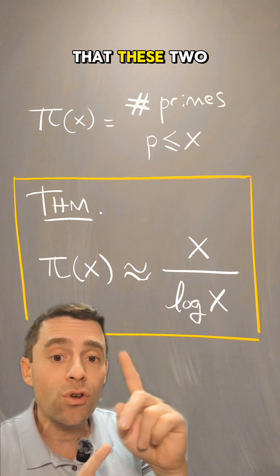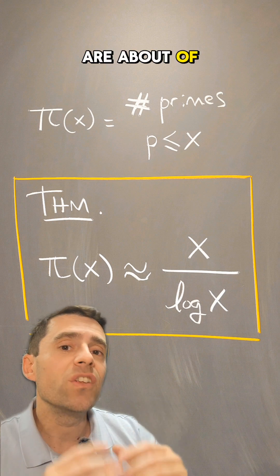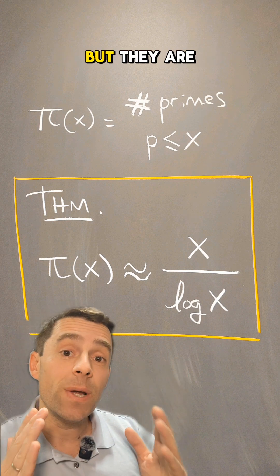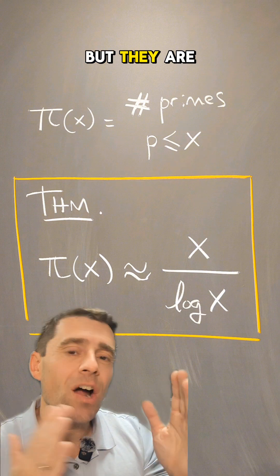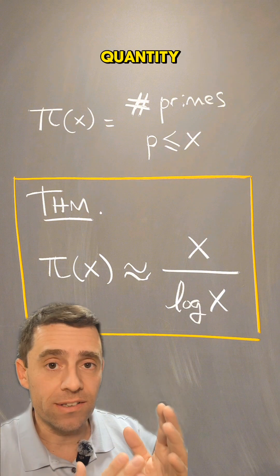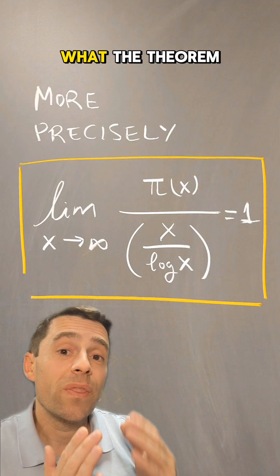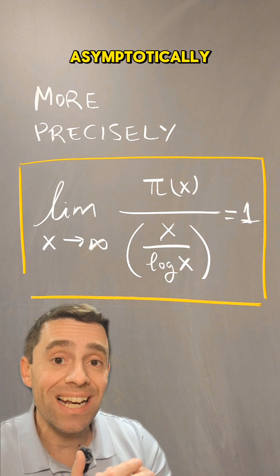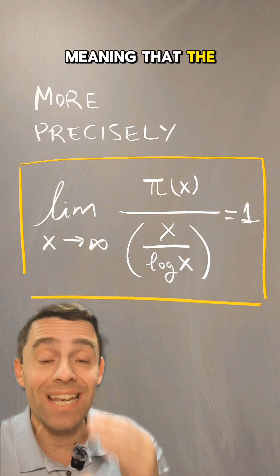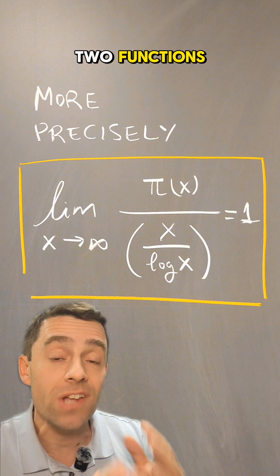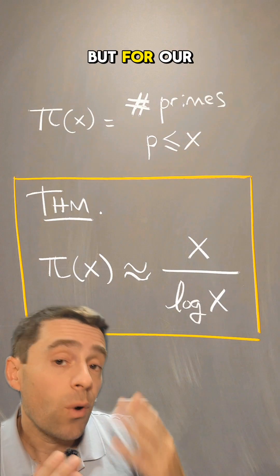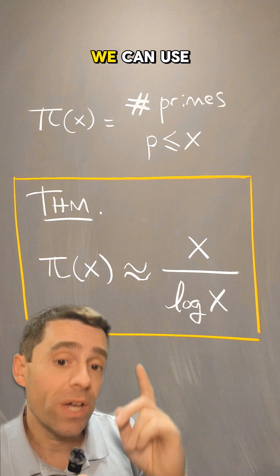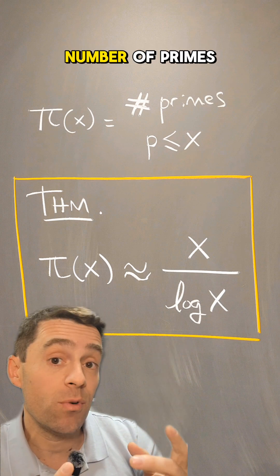This is saying that these two functions are about the same order of magnitude. There is an error between the two of them, but they are roughly the same quantity. More precisely, the theorem says that pi of x and x over log of x are asymptotically the same function, meaning that the limit of the quotient of the two functions goes to 1. For our purposes, to just get an idea of how many primes are there in an interval, we can use this as an approximation.